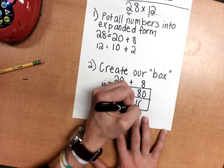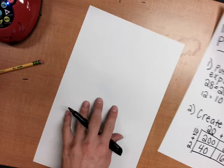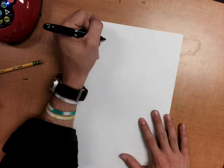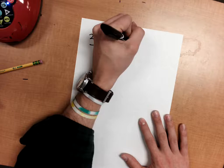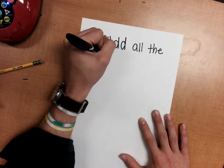Once we have all the numbers filled in our box, our third step is to add all the numbers in our box together.